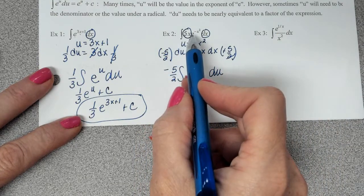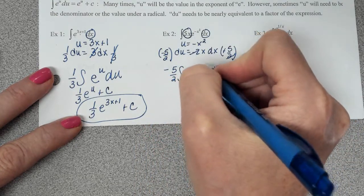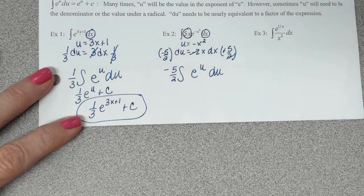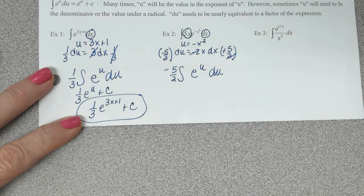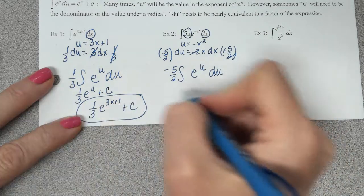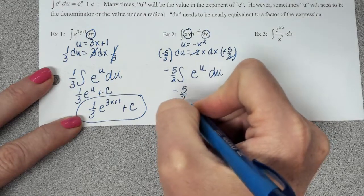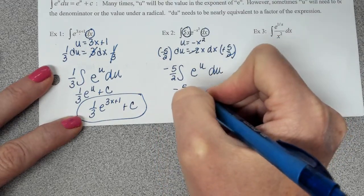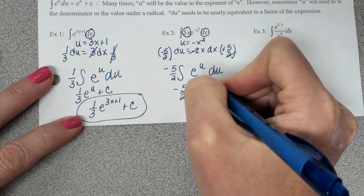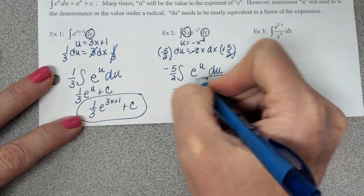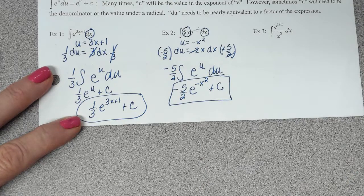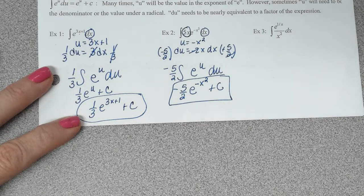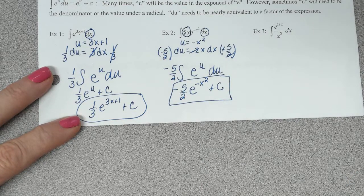So this 5x dx that I have circled is just going to get replaced with negative 5 halves du. And now my problem just becomes e to the u. And we just said the integral of e to the u is e to the u. So I'm going to have negative 5 halves. This integral is e to the u, but I don't want to do the u. I'm just going to replace it with what the x value was for it.